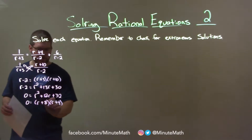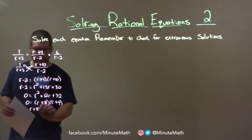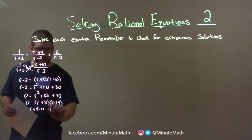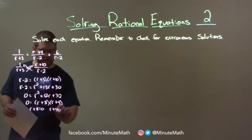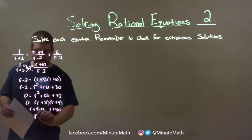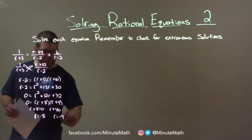Alright, set both of those equal to 0: r + 8 = 0 and r + 4 = 0. So r equals negative 8, and r equals negative 4.